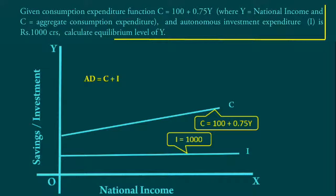Substituting the values for C and I, we get 100 + 0.75Y + 1000. On simplifying we get 1100 + 0.75Y. This is the Aggregate Demand Function.